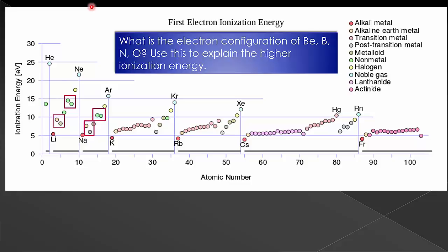To figure out why this is, let's look at the electron configurations of each. So I would actually suggest pausing the video and writing the electron configurations of beryllium, boron, nitrogen, and oxygen on your own first for practice and then come back.